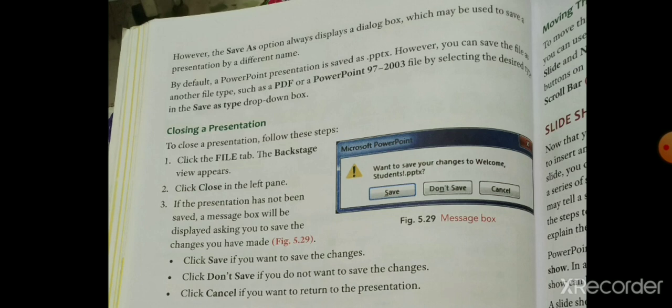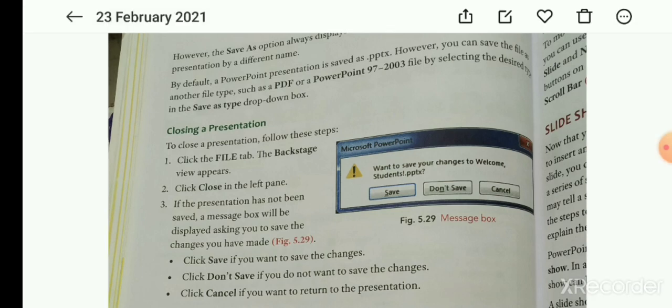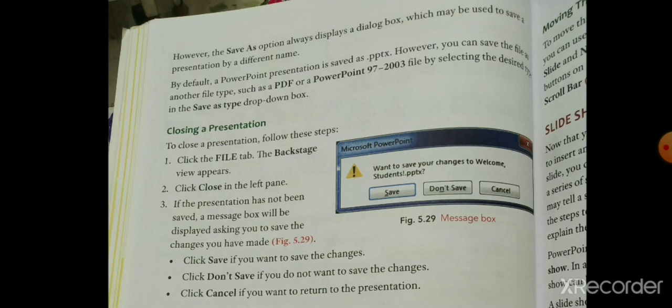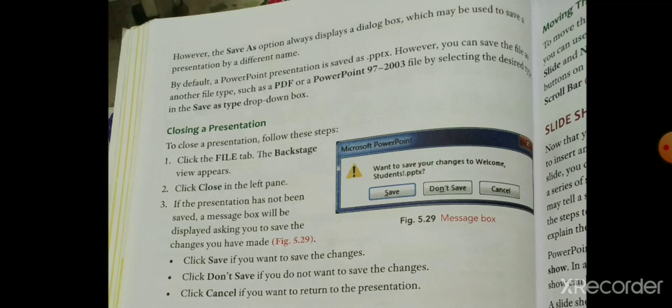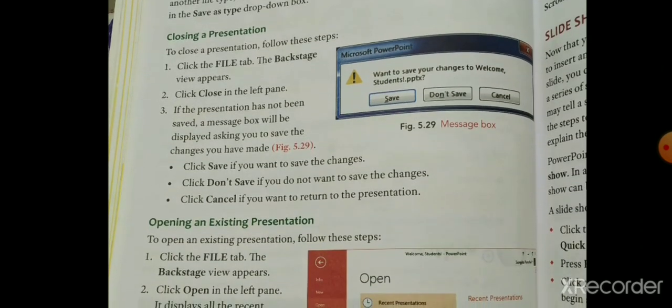However, you can save the file as another file type, such as a PDF or a PowerPoint 1997 to 2003 file, by selecting the desired type in the Save As Type drop-down box। यानी आप PDF या PowerPoint 97 से 2003 तक की type में save करना चाहते हैं तो Save As Type drop-down box में select करना पड़ेगा।